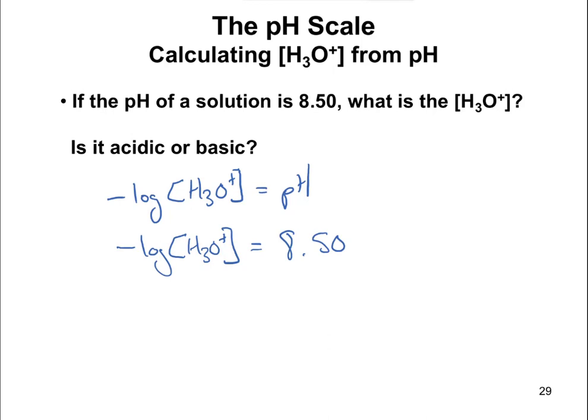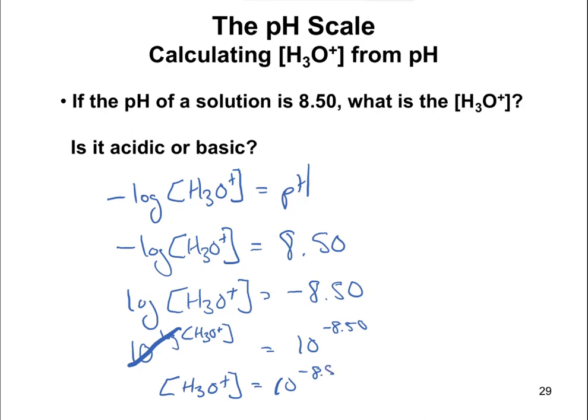Now, how do you get rid of the log and solve for this? So what we're going to do is move the negative sign over here. So we have just log of the concentration of H3O+ here equal to negative 8.50. And then if you've come across this in an algebra class at some point, the way you get rid of the log is to raise it to the power of 10. So basically you say 10 to the log of the concentration of H3O+ is equal to 10 to the negative 8.50. Any time you have 10 and a log there, those guys cancel each other out.